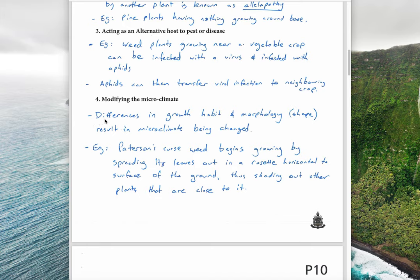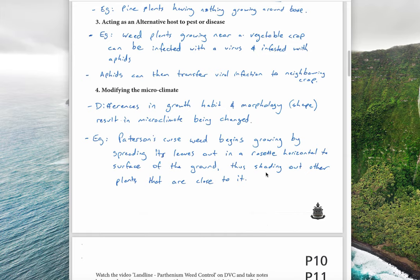Lastly, weeds are particularly good at modifying the microclimate, which is what makes them effective weeds. Their growth habit and morphology — meaning their shape — results in the microclimate being changed. An example is Patterson's curse, which begins growing by spreading its leaves out in a rosette pattern along the surface of the ground, creating shade all around it and stopping other plants, even the crop, from accessing sunlight. This makes it very successful at competing against what you're trying to grow.